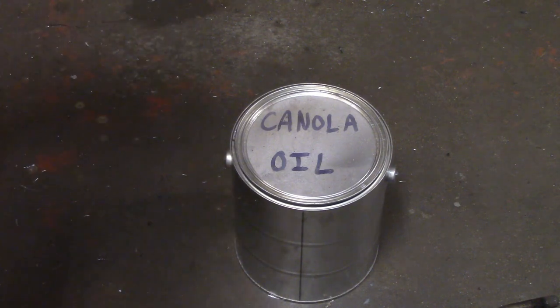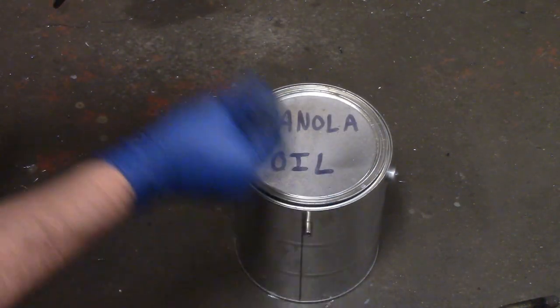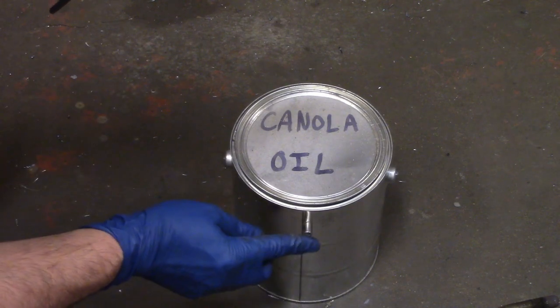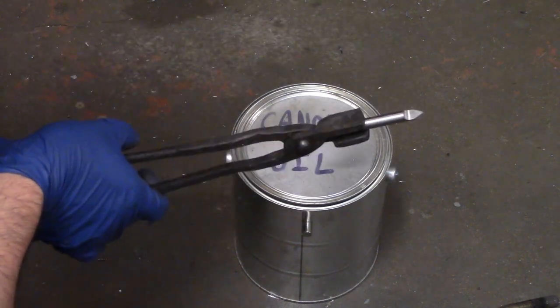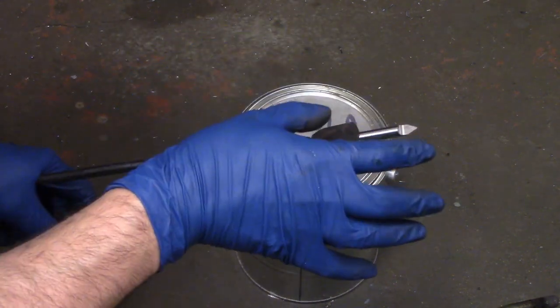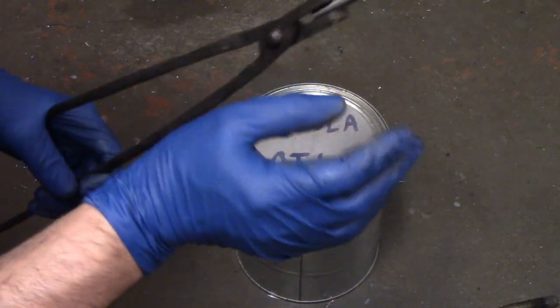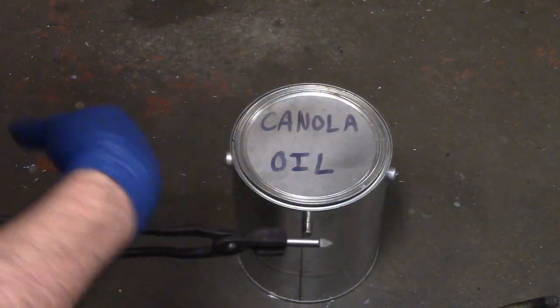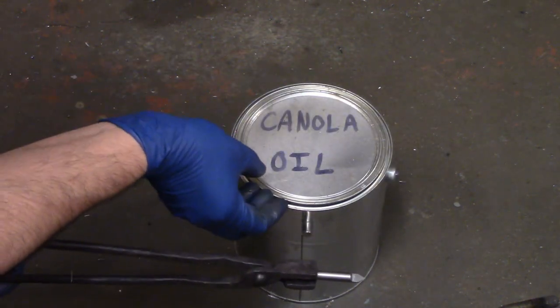Here's my can of canola oil. I have a small rare earth magnet that I'm going to stick to the side of the can. The whole idea with heating to non-magnetic is that's at the point where the steel starts to change phases. It starts to go to a different type of crystalline structure. So once this is non-magnetic, I'll heat it up slightly past that, and then I'll go ahead and quench it.